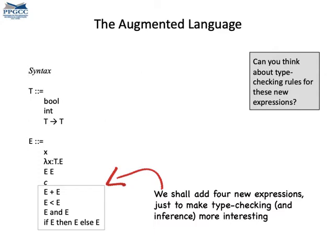Thus far, we have only ints as basic types in our programming language. Let's add a few more expressions just to have booleans in our language too. Could you design type checking rules for these four new expressions?